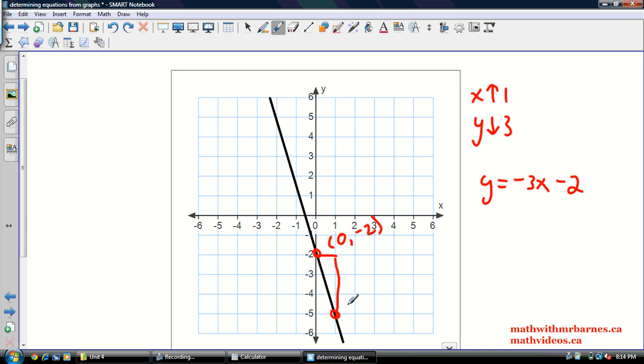What about this point? This point is 1, negative 5. So, we got negative 3 times 1 is negative 3. Negative 3 subtract 2 is negative 5. So, again, this must be our equation.